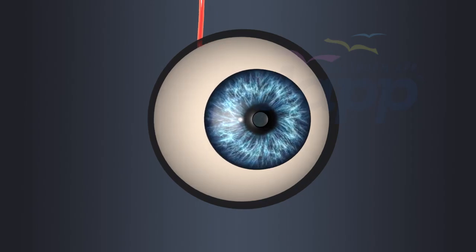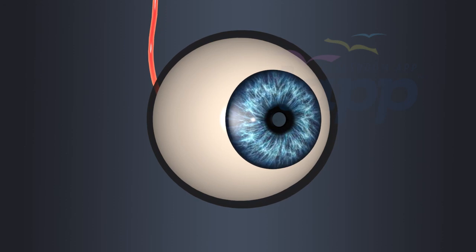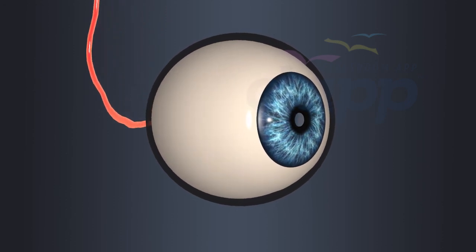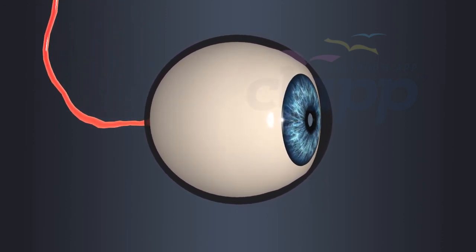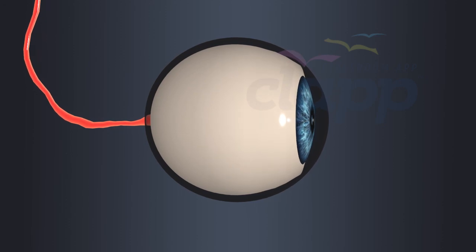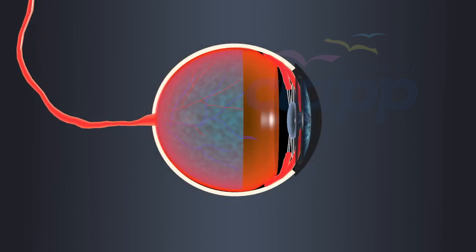The human eye is a complex organ that allows us to perceive and interpret visual information from our surroundings. Here is a simplified overview of how the human eye works.